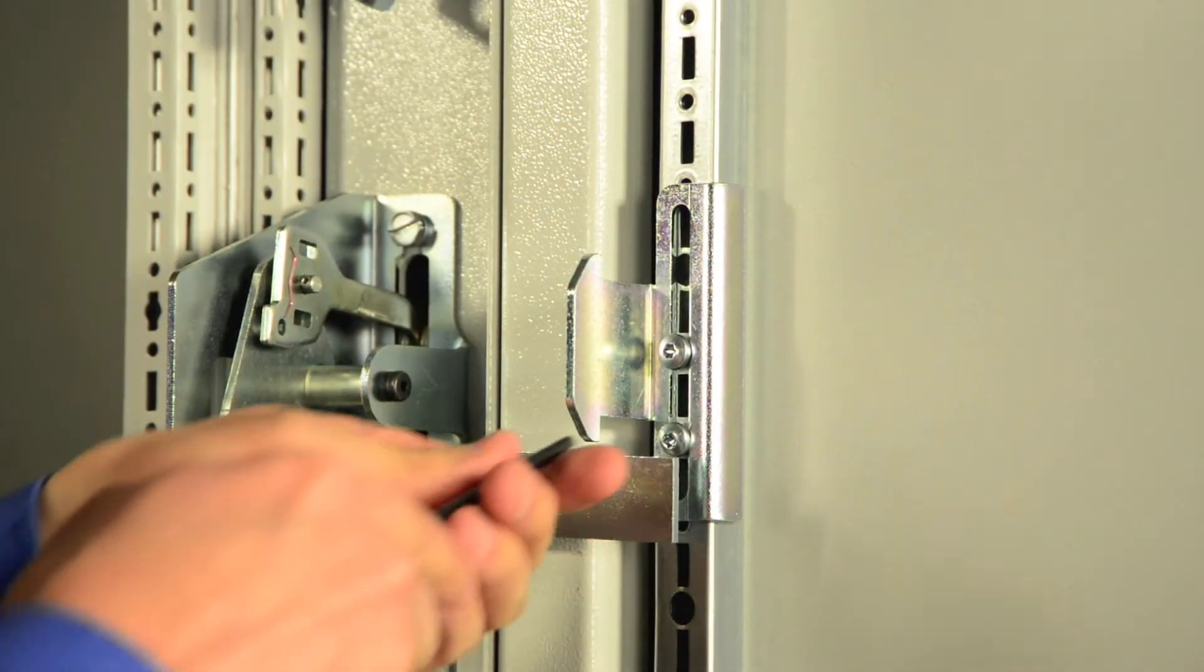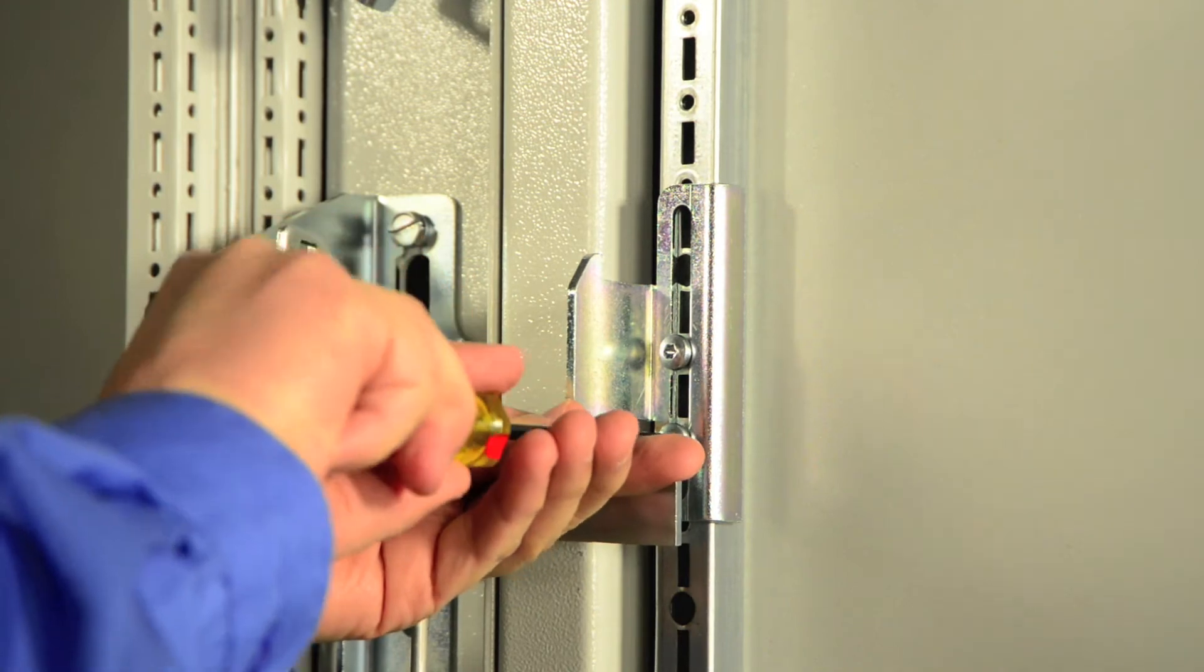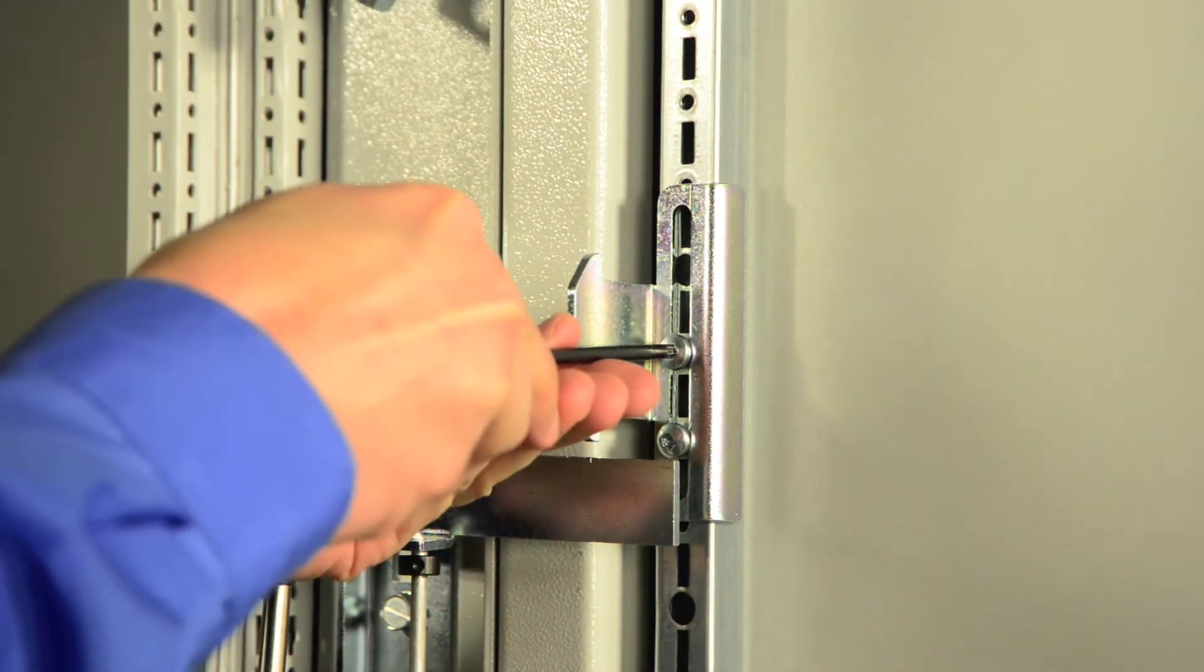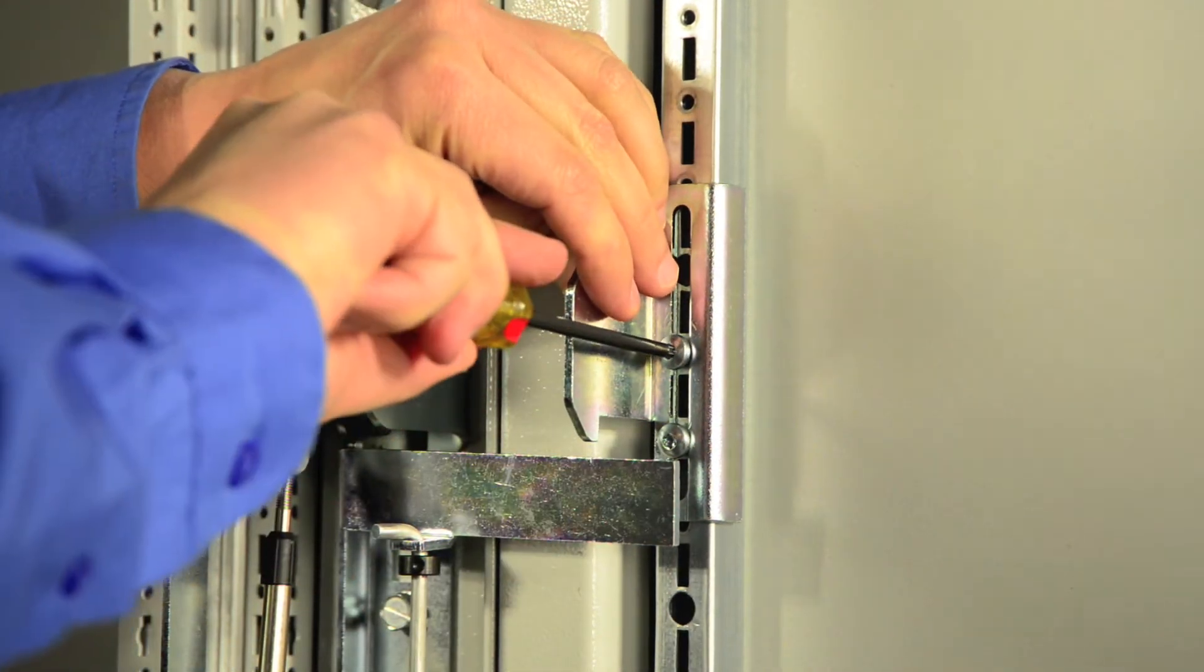From the inside of the enclosure, position the door catch on the door stiffener such that it is effectively locking the main door and preventing it from opening.